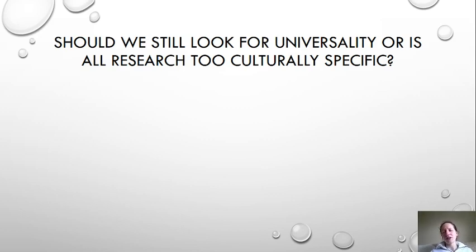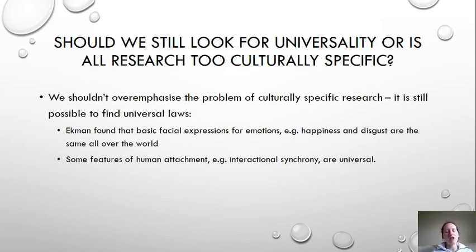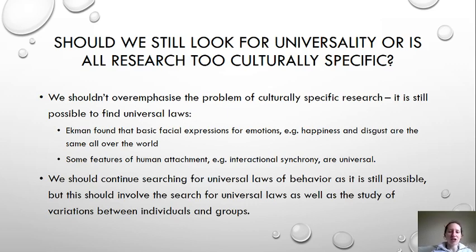If cultural bias is really important to avoid, does that mean all research is culturally specific and there's no point looking for universal laws of behaviour? We shouldn't overemphasise this problem, because it's still possible to find universal laws. For example, Ekman found that basic facial expressions for emotions are the same all over the world, and interactional synchrony is universal. The way to find universal laws is not through culturally biased research, but by involving the search for universal laws alongside the study of variations between individuals and groups.